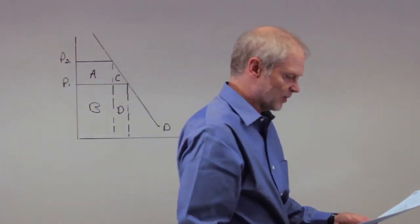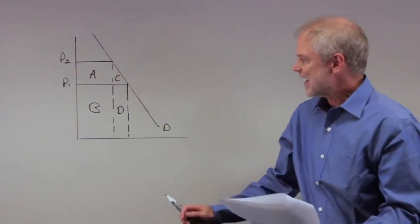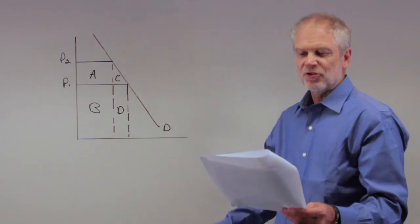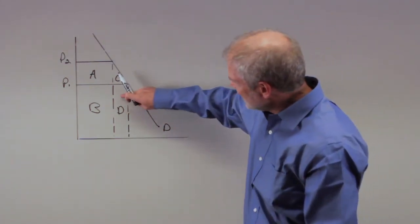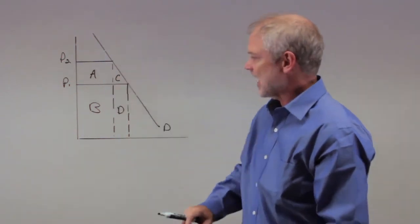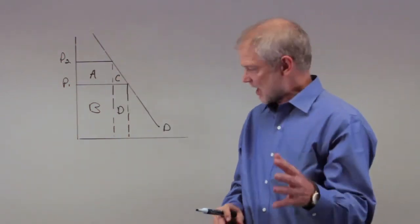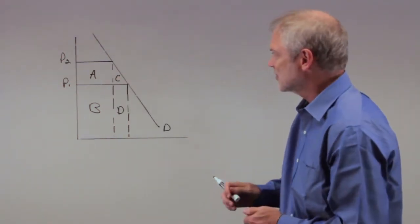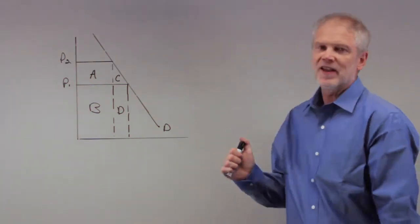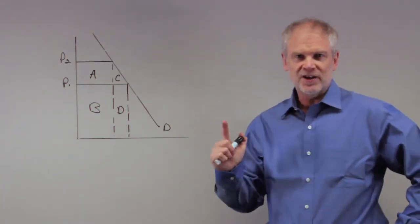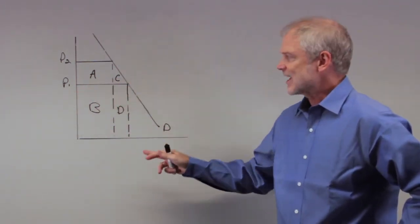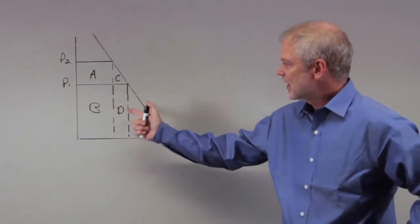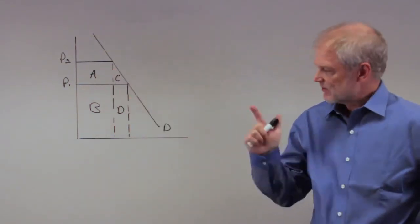It says, if rectangle D is larger than rectangle A, then what happens? This is not your geometry class—this is an economics class. We can use this to analyze something. What are they getting at? They're trying to force you to understand the impact of elasticity when you change price.